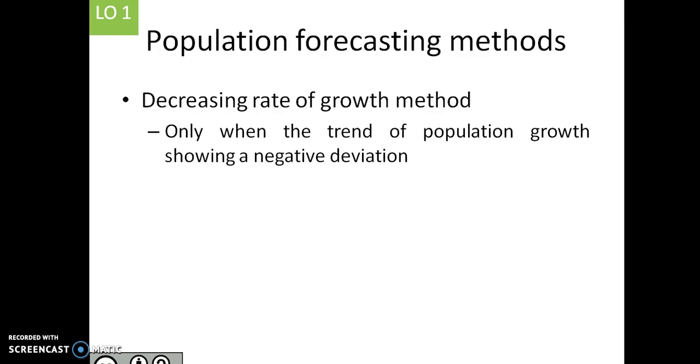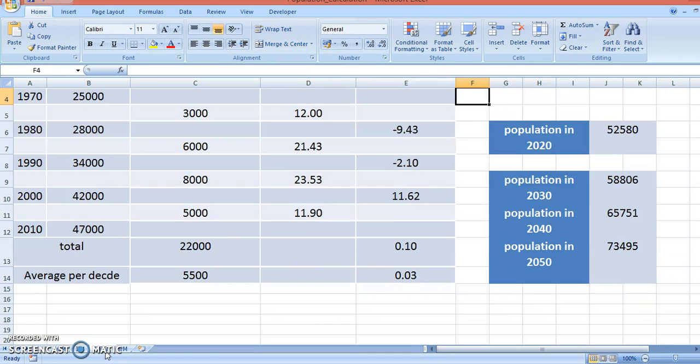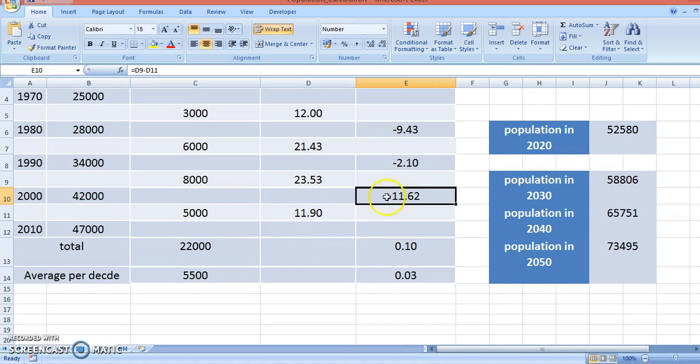The next one is decreasing rate of growth method. We assume that sometimes the population growth is decreasing. What is the trend then? We can find out this decreased rate of growth by using this Excel sheet calculation. You know the population is increasing. We will find out whether this population rate is decreasing. Instead of increasing, the decreasing rate is becoming negative here, and here also. Here it is positive because it is decreasing, so the rate is positive. We take the total and find out the average.